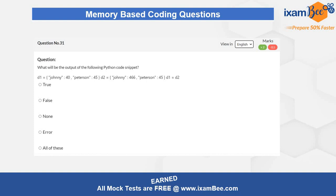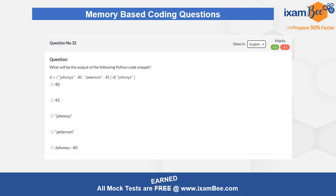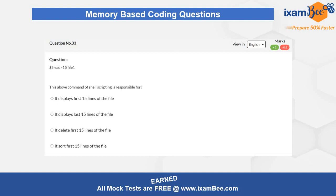For question 31, you have to determine whether d1 equal to d2 will be true or false, or will give an error. Question 32 is again on Python — if d is assigned some values and then d.keys() is used, what will be the correct output? Question 33 is related to shell scripts where you have to check a command and identify the purpose of that particular command.